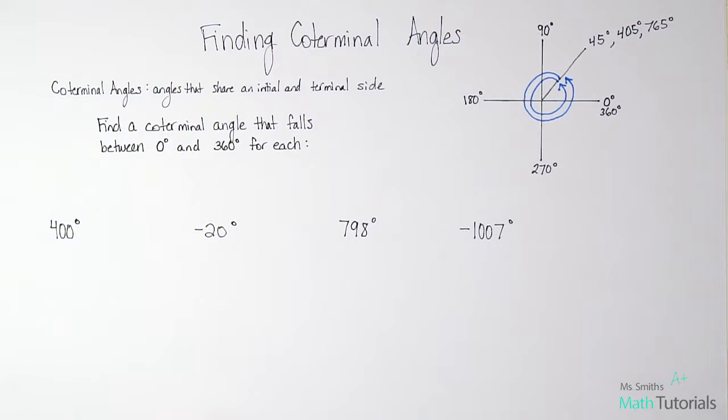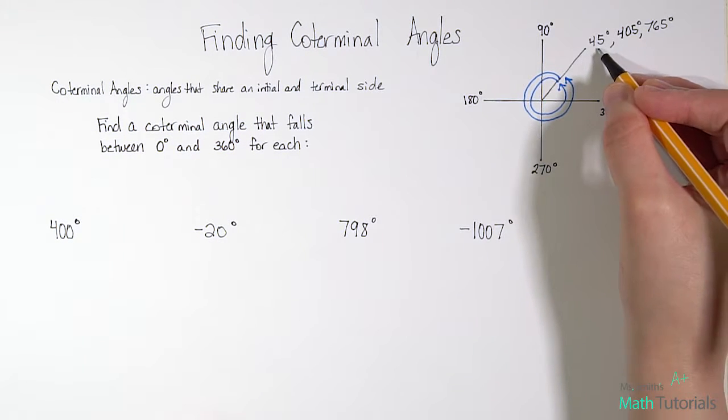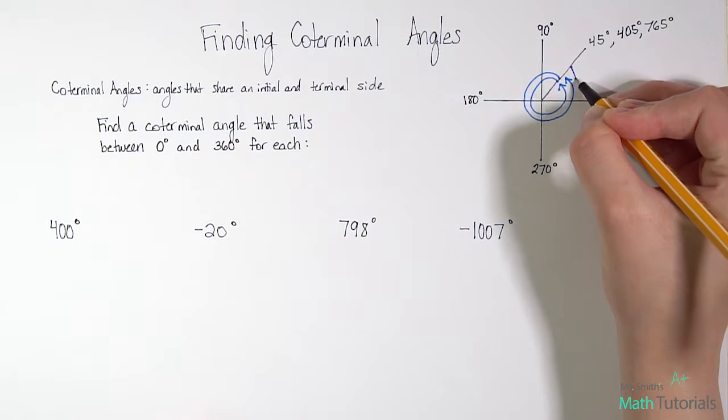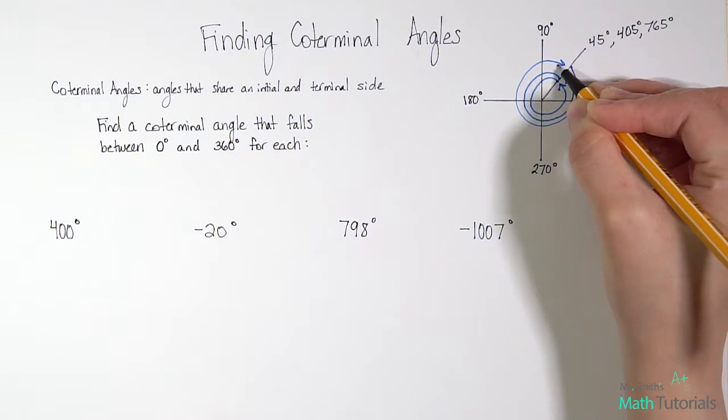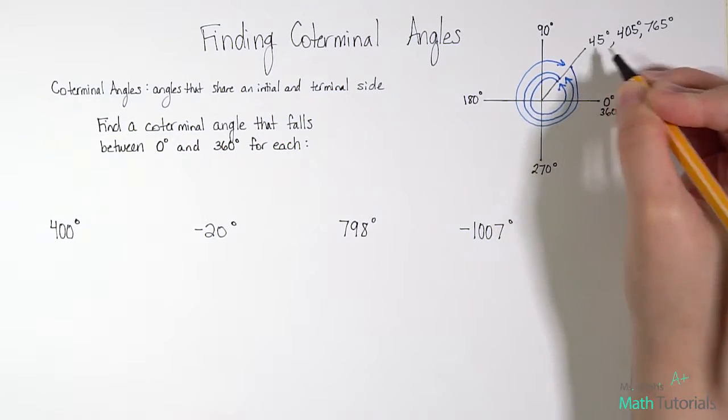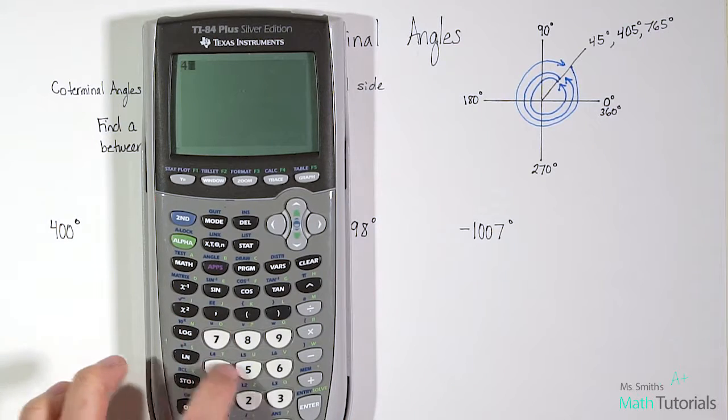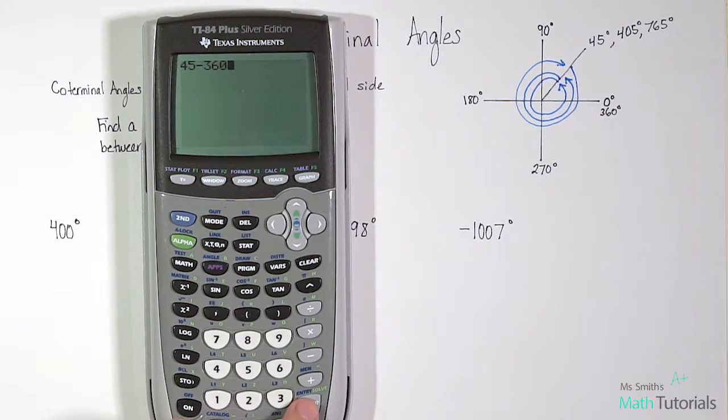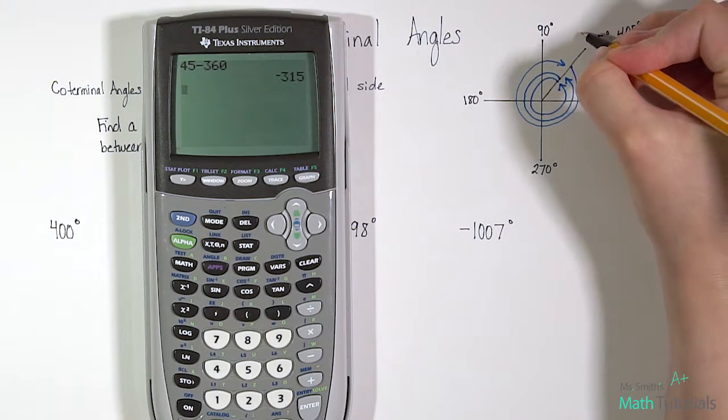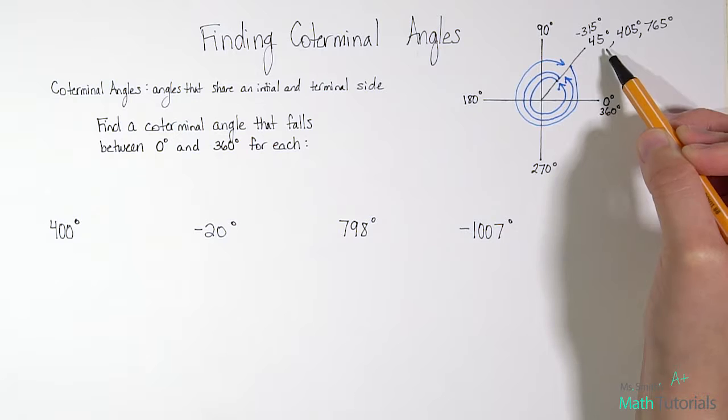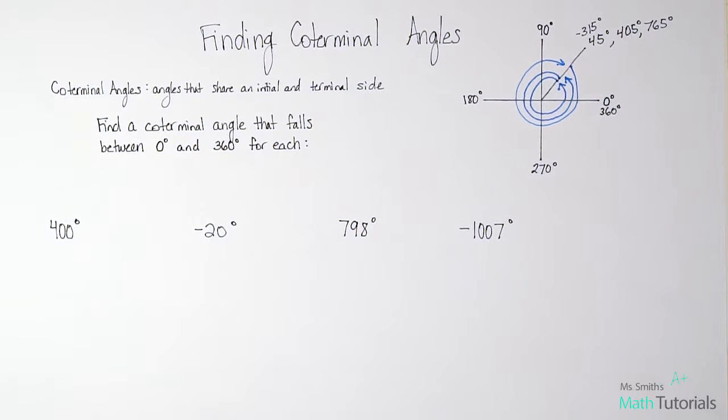And you could also move in reverse. So let's say we started at that 45 degrees again, but this time we went this way on the unit circle, like we went in reverse. So then what we would do is we would take our 45 degrees, our terminal angle, and we would subtract 360. And that would put us at negative 315 degrees. What this is saying is that 405, 765, and negative 315 degrees, these are all coterminal angles to 45 degrees.